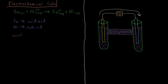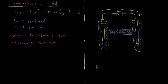To summarize: we want to separate these oxidation-reduction reactions to create an electric current which we can use to do work. The type of setup that accomplishes this is an electrochemical cell, and more specifically, the setup shown here is called a Daniel cell.